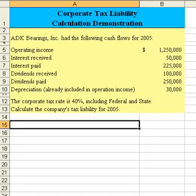Hi, everyone. Let's spend a minute or so and work through a quick demonstration on how we would go about solving a problem to calculate a company's corporate tax liability. The problem is in front of you in yellow. ADK Bearings has the following cash flows for 2005. There's a variety of items in front of you. The corporate tax rate is 40%, which includes both federal and state taxes, and what we are asked to do is calculate the company's income tax liability.